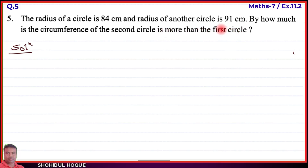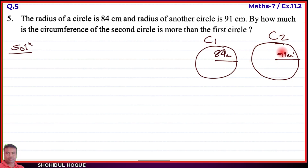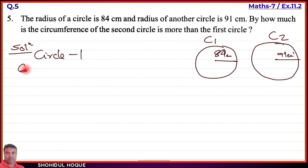Understanding the question: there are two circles. Let us call them circle 1 and circle 2. Circle 1 has a given radius, and circle 2 has a given radius. We need to find how much more the circumference of circle 2 is than circle 1. First we will find both circumferences, then subtract the first from the second.